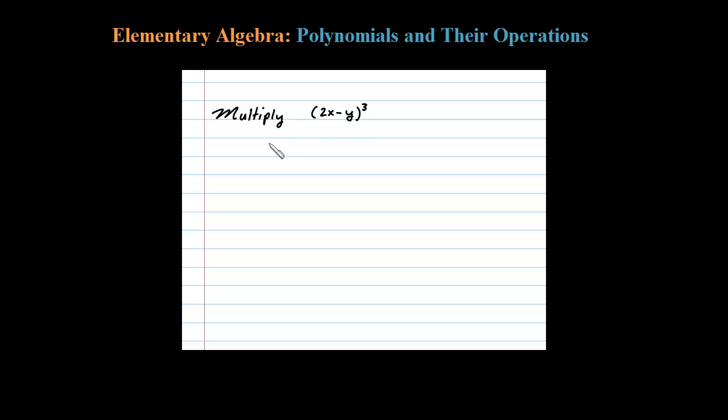Here we're asked to cube a binomial, so what that really means is to take that binomial and multiply it times itself three times. Let's do this two terms at a time, so first let's multiply these two, a binomial times a binomial.